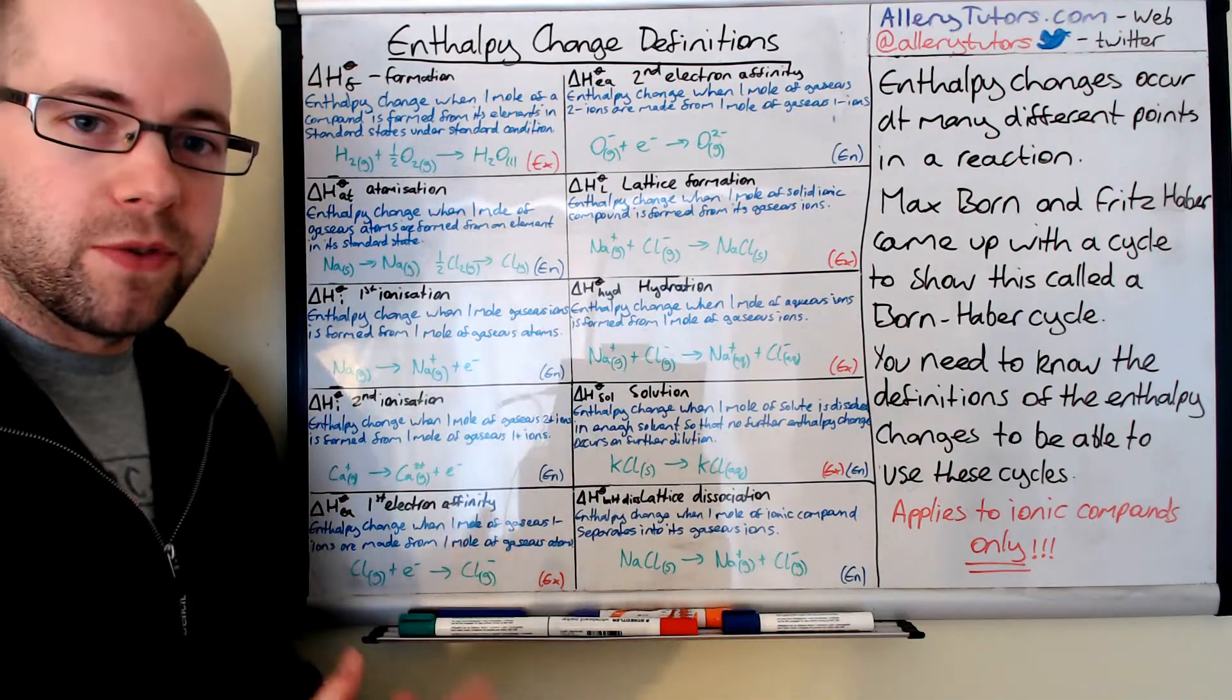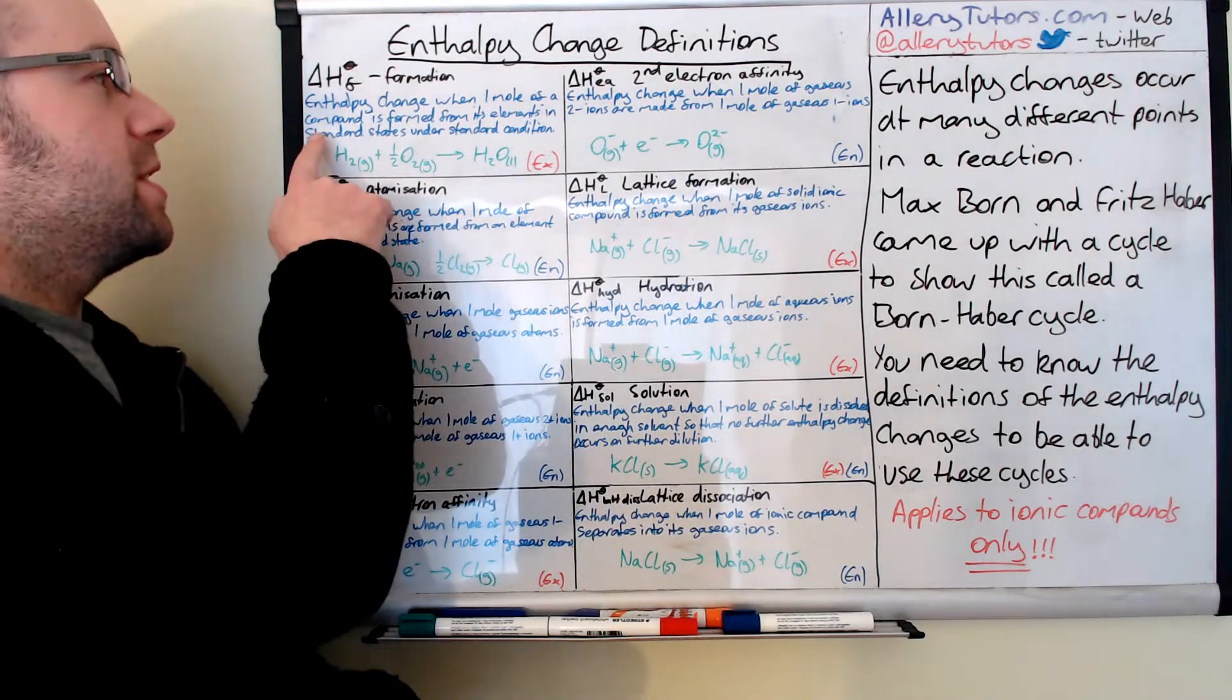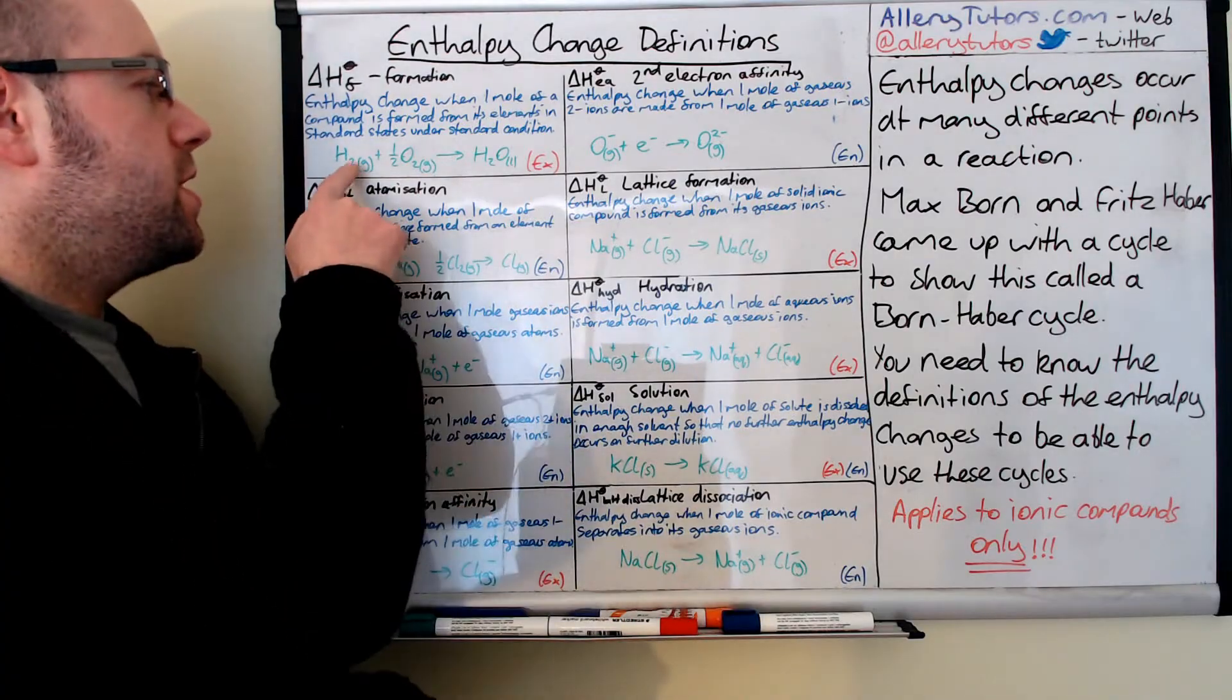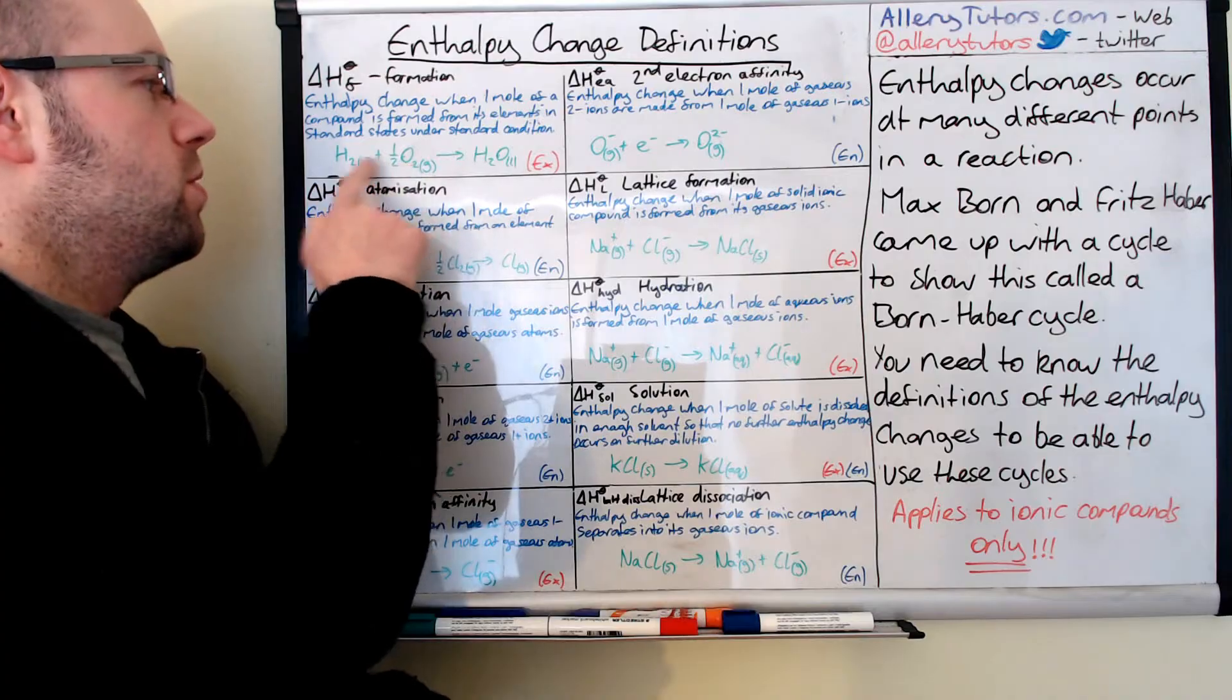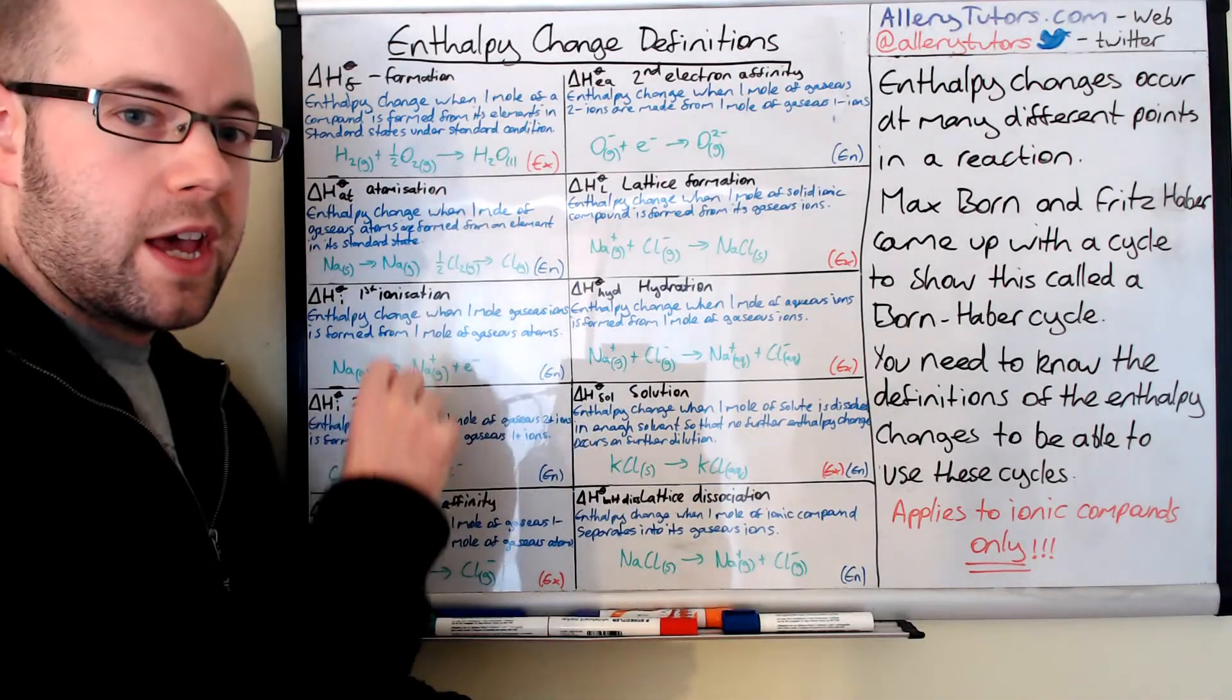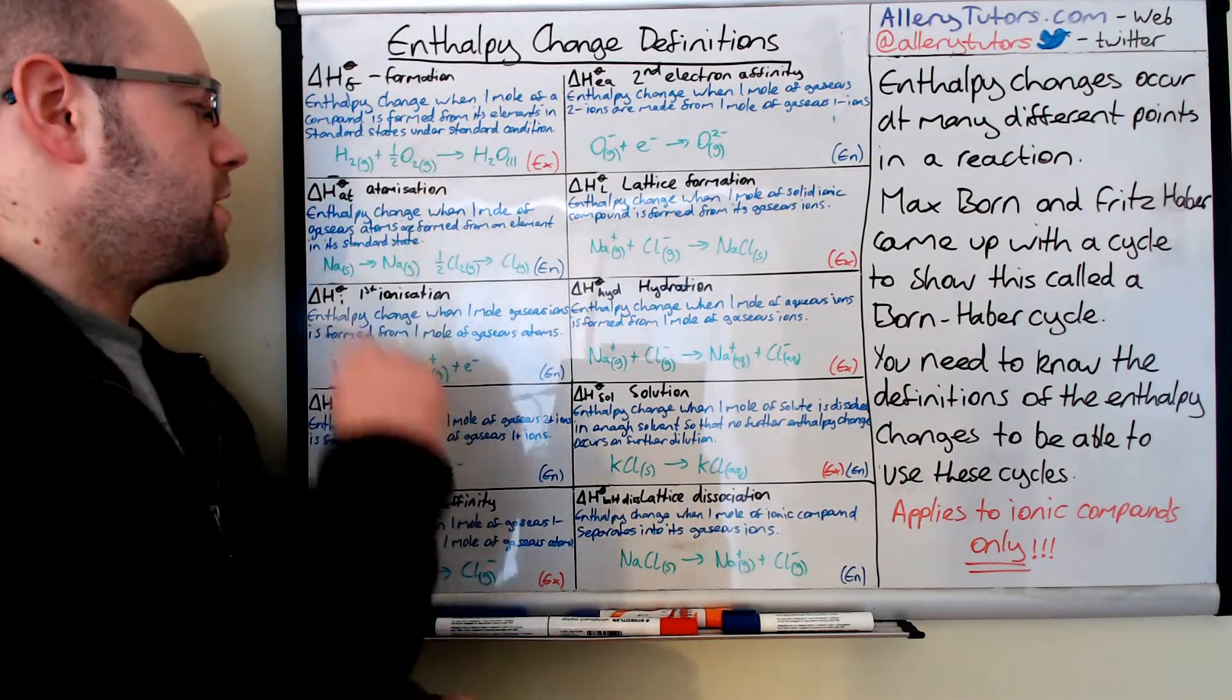We're going to start with enthalpy of formation. The enthalpy of formation is when one mole of a compound is formed from its elements in standard states under standard conditions. It's really important that it's one mole of a substance. You can see here we've got the formation of water, H2 plus O2, both in their standard states, forming one mole of a substance. It can't have a 2 in front or half. It's got to be one mole. This process is exothermic. It gives out heat energy because we're bond forming.